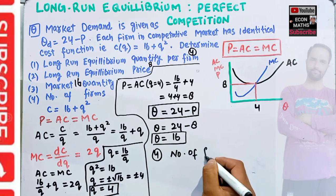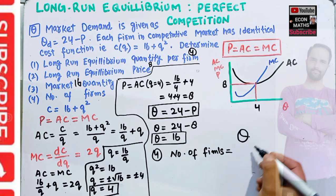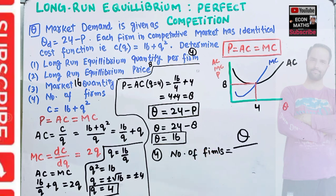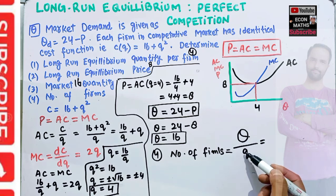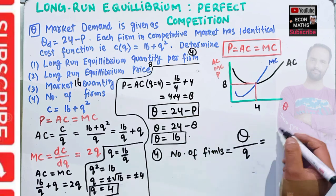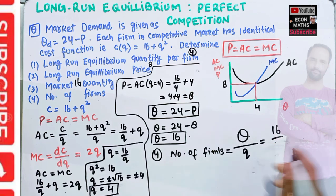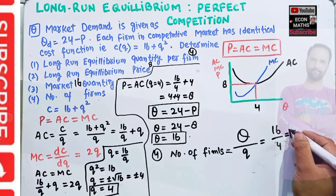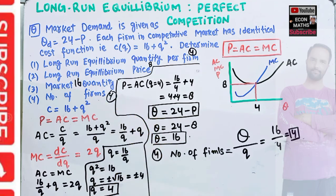The number of firms is the total market quantity (capital Q) divided by the quantity produced by each single firm (small q). Total market quantity is 16 and each firm produces 4 units, so number of firms = 16 / 4 = 4. The number of firms in the long-run equilibrium is 4.